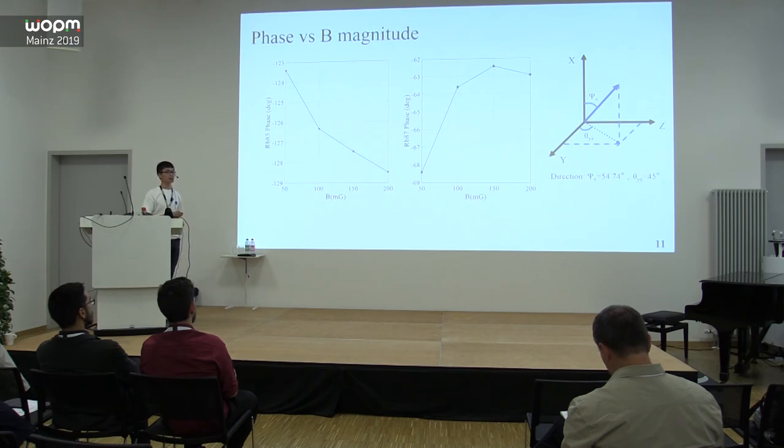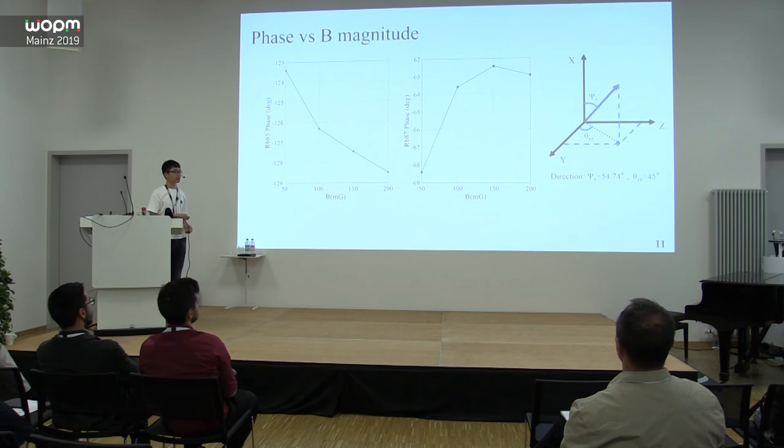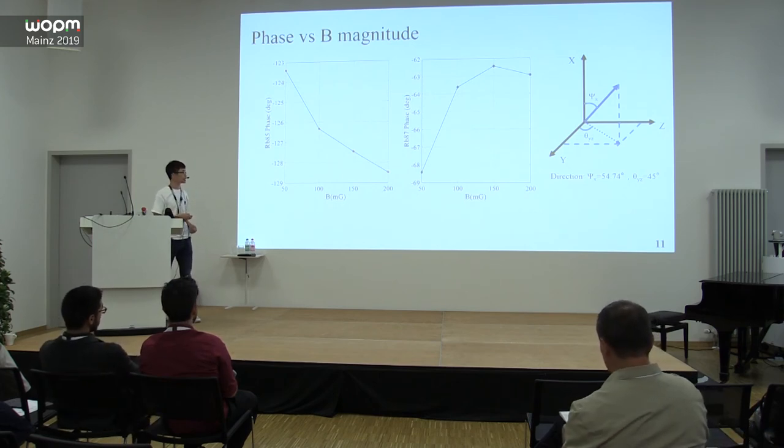We think this change mainly comes from the interaction between rubidium-85 and rubidium-87. The effect changes faster when B is less than 100 microgauss and more slowly when more than 100 microgauss. This is reasonable since the Larmor frequencies between rubidium-85 and rubidium-87 increase with the growth of B, meaning the interaction between them will grow weaker.